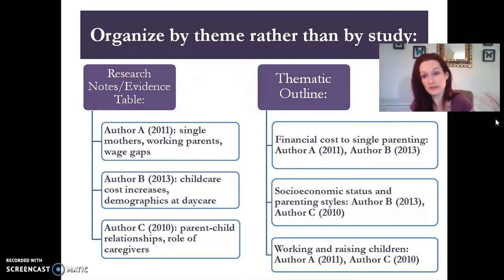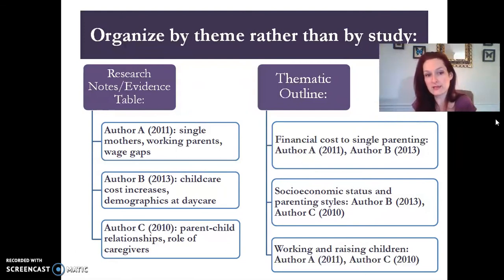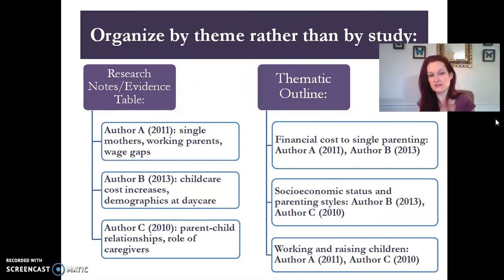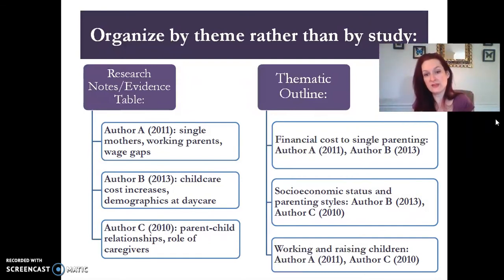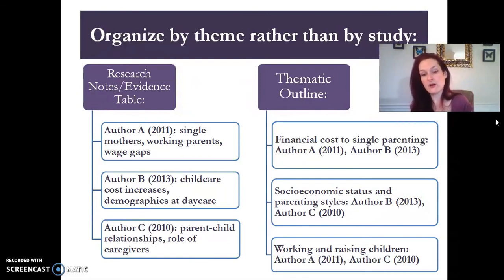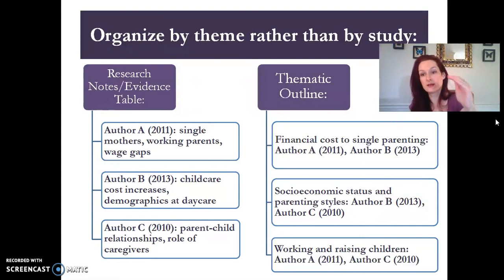Instead, you go theme by theme or finding by finding. For example, on the left we have notes from our evidence table: Author A's study covers single moms, working parents, and wage gaps; Author B covers child care cost increases and daycare demographics; Author C covers parent-child relationships and the role of caregivers. Over on the right, a thematic outline pulls out: Authors A and B both looked at financial cost to single parenting; Authors B and C both looked at socioeconomic status and parenting styles; Authors A and C both had to do with working and raising children. We're pulling themes out rather than going study by study.